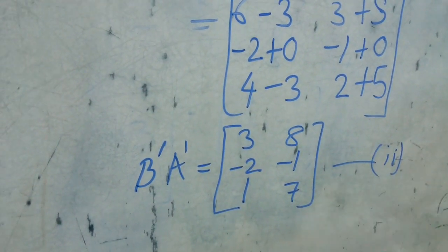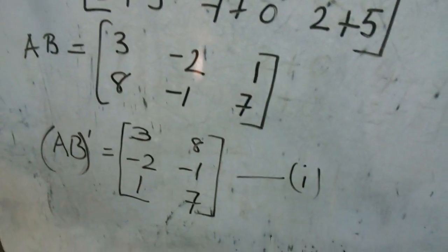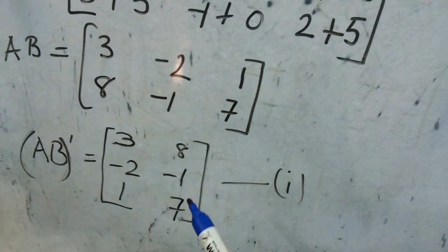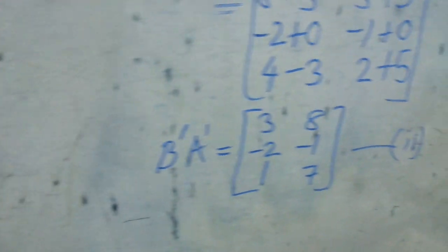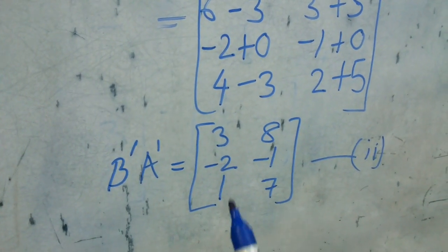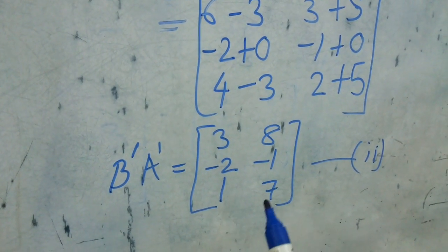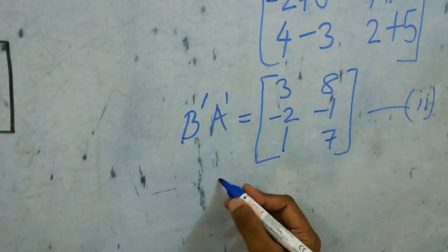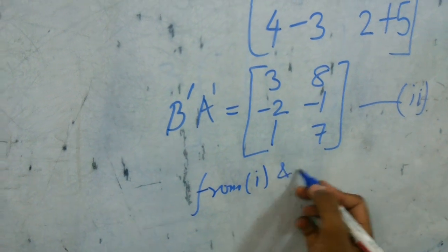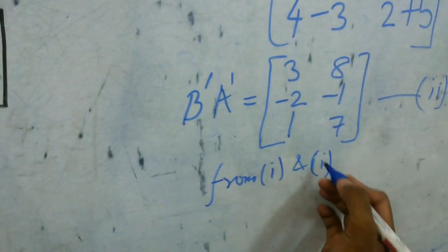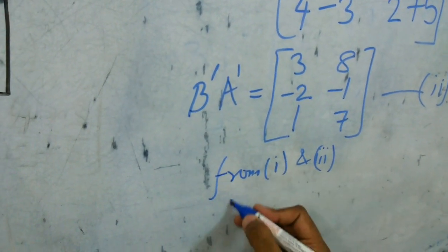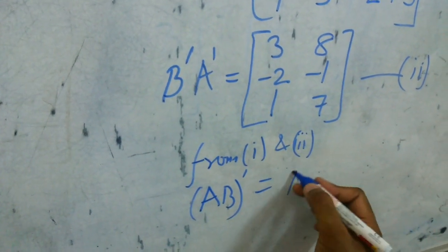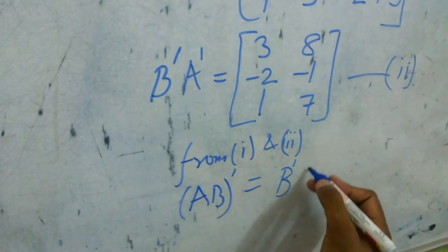This is result (2). Comparing result (1) AB transpose which is [3, 8; -2, -1; 1, 7] with result (2) B transpose into A transpose, both are the same. So from (1) and (2) we can conclude that AB transpose is equal to B transpose into A transpose, which is verified.